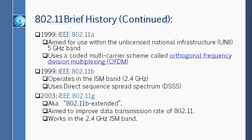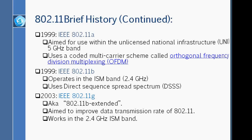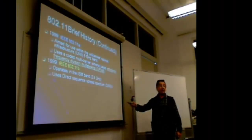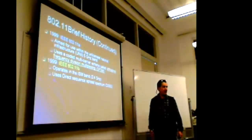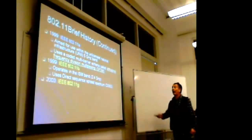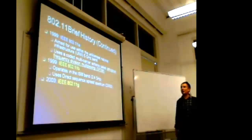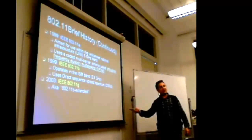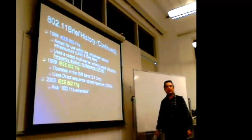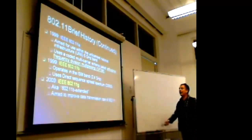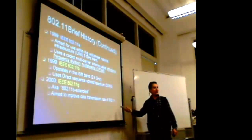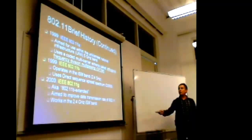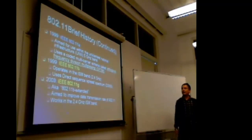For the 802.11b protocol, it operates in the ISM band at 2.4 gigahertz and uses Direct Sequence Spread Spectrum — DSSS. And 802.11g, in 2003, also known as '802.11b extended,' aimed to improve the data transmission rates of 802.11b while still working in the 2.4 gigahertz ISM band.